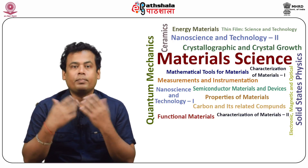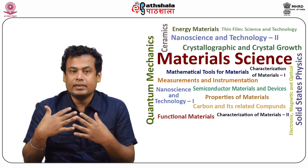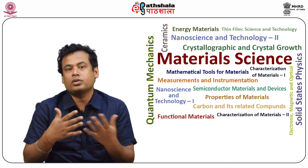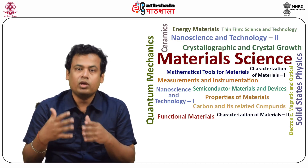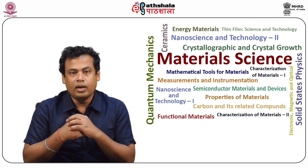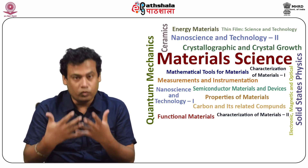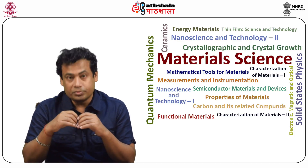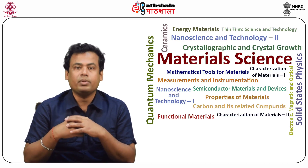Fluorescence quenching is a process for spontaneously decreasing the fluorescence intensity of any fluorophore. A variety of molecular processes can result in quenching, including excited state reactions, molecular rearrangements, energy transfer, ground state complex formation, and collisional quenching. The substances that decrease the intensity of fluorescence are termed as quenchers. Quenching may occur by several mechanisms: collisional or dynamic quenching, static quenching, and quenching by energy transfer.